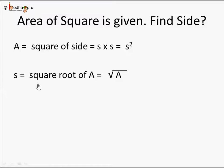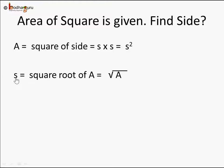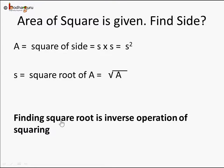Given area, you find the side by doing a square root operation. And vice versa, given the side and you want to find the area, you use the square operation, which we learned in the last video. So finding square root is nothing but an inverse operation of square.